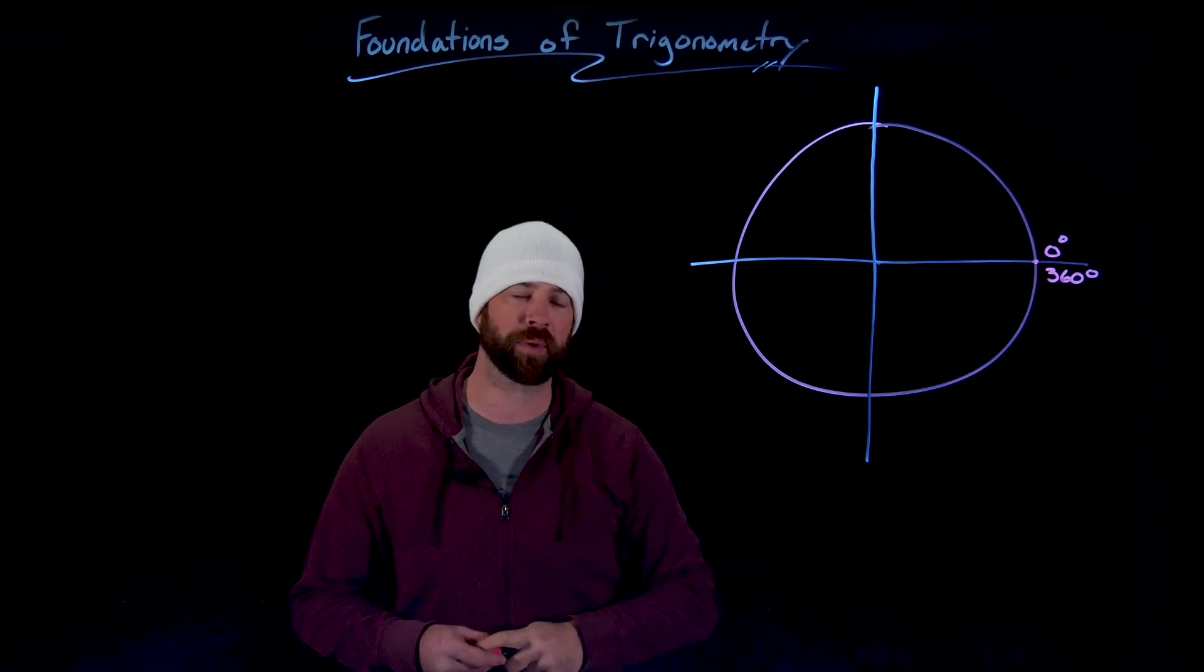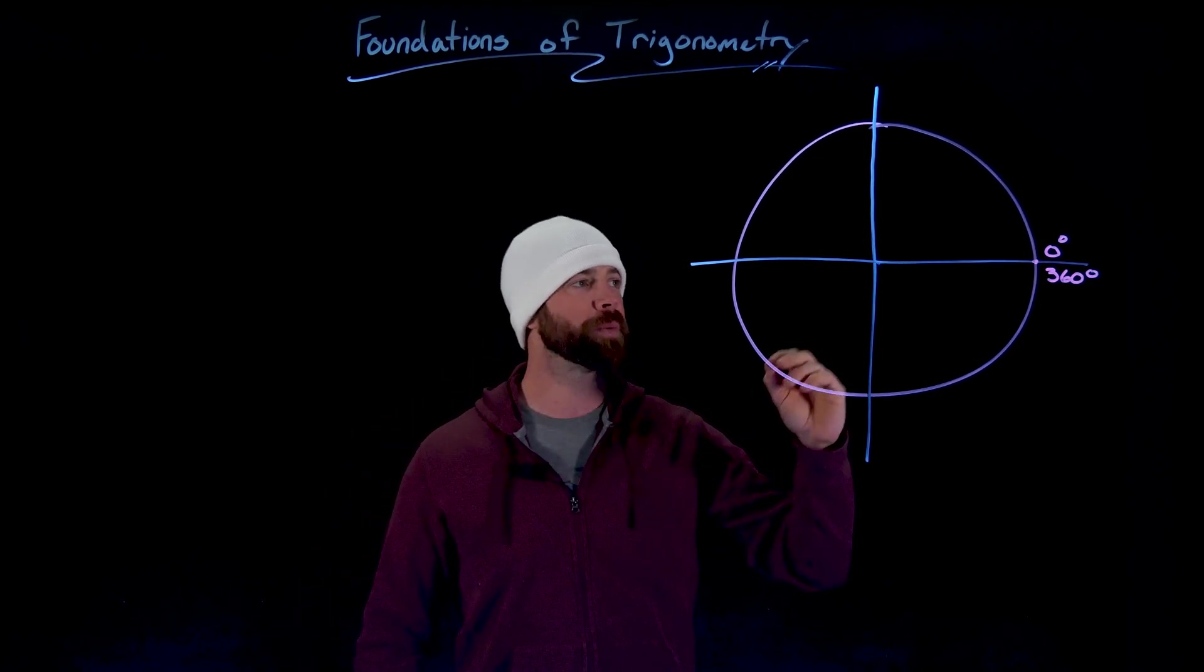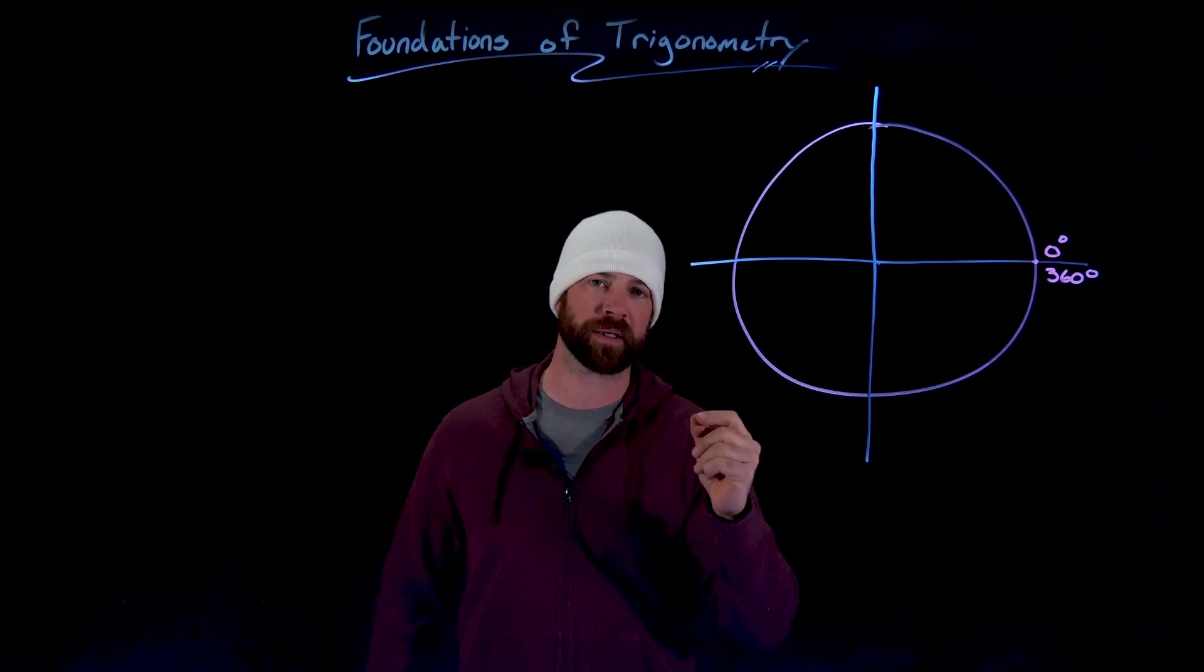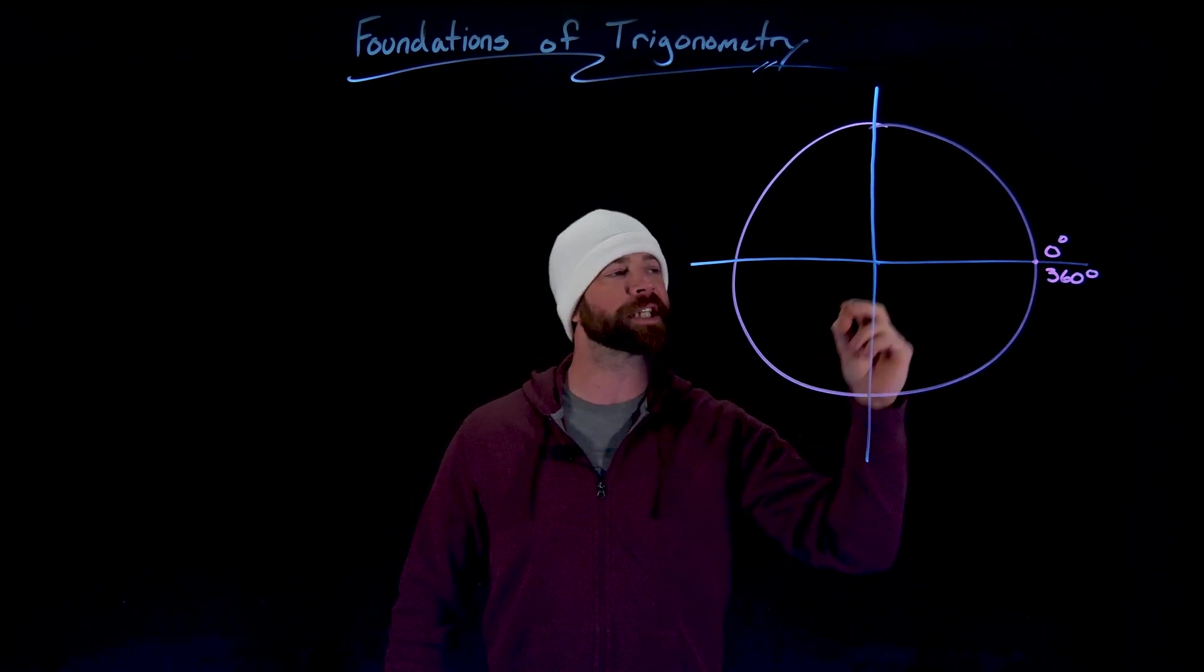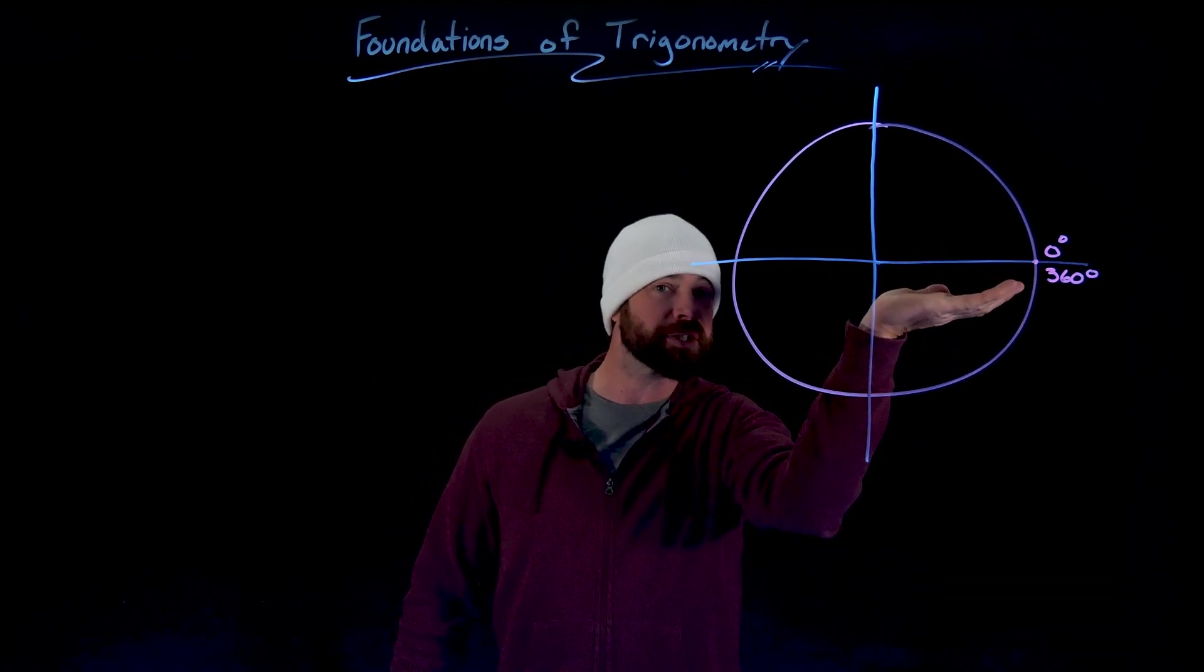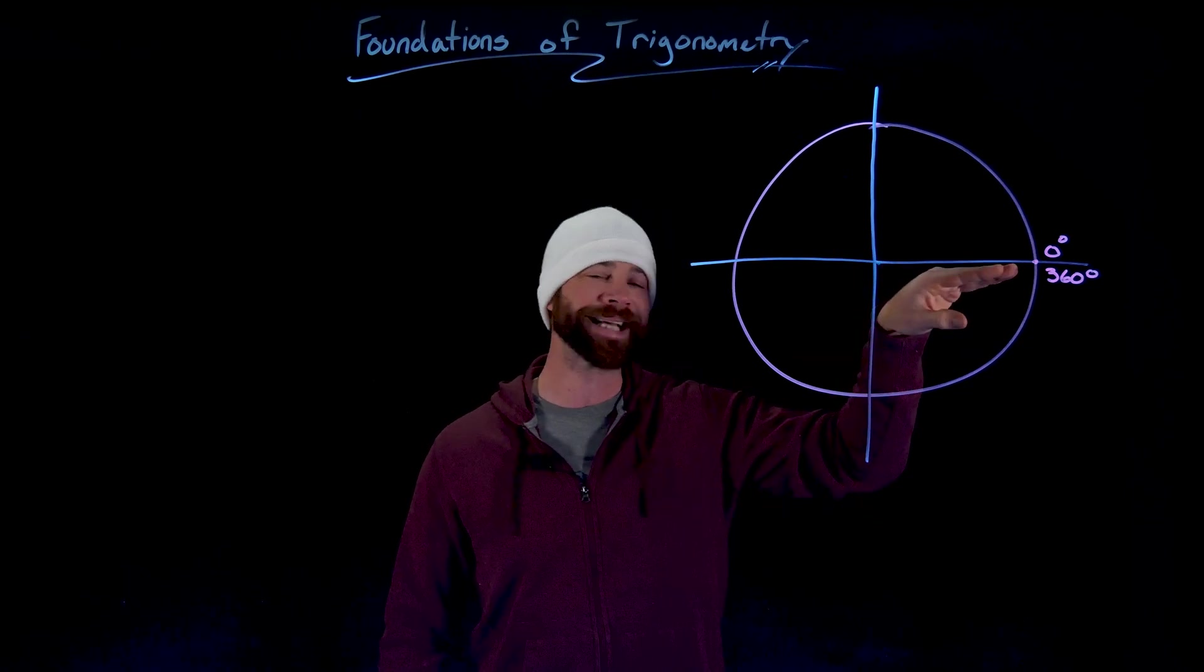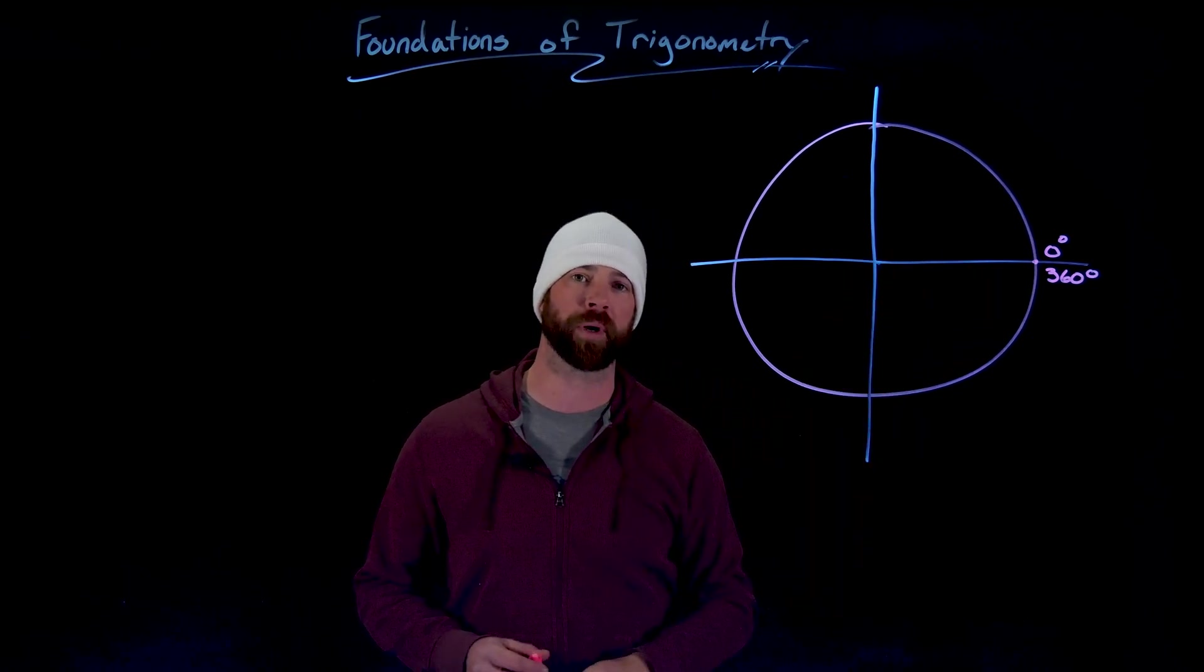And importantly, we'll get more into this in a little bit. We would call zero degrees and 360 degrees coterminal because we started on a circle here and completed either zero degrees or 360 degrees, we would end up at the same point.